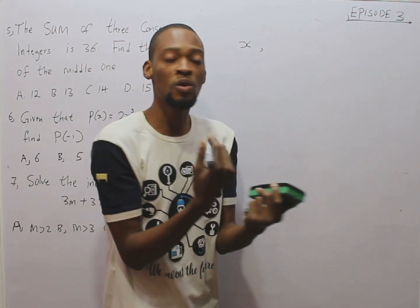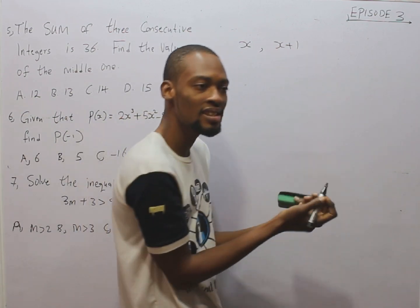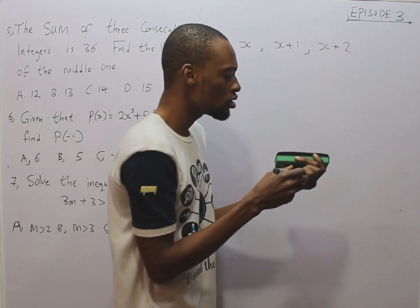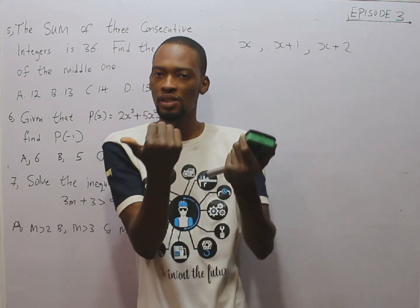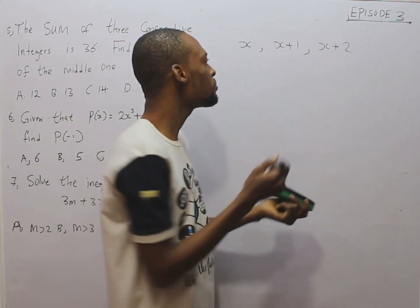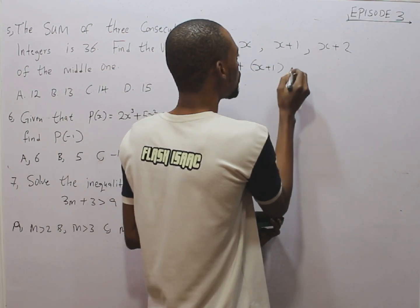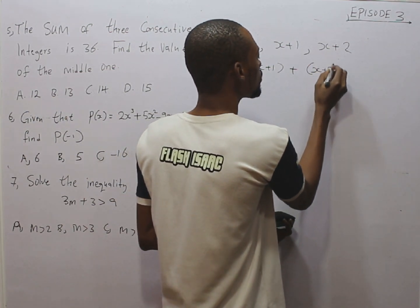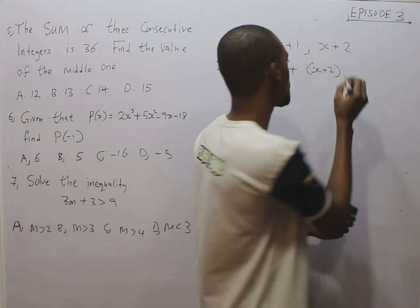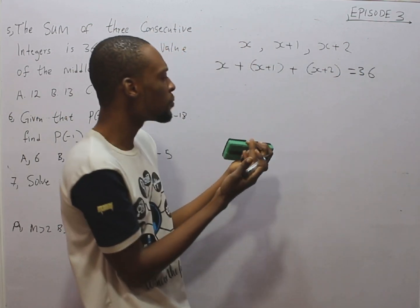then since they are consecutive, they are following each other closely, the second one will simply be x plus 1, right? And the third one will simply be x plus 2. So, let's take this as the 3 consecutive integers. The question says the sum. So, the sum simply means the first one plus the second one which is x plus 1 plus the third one which is x plus 2. So, the sum gave us 36. So, it is equal 36.